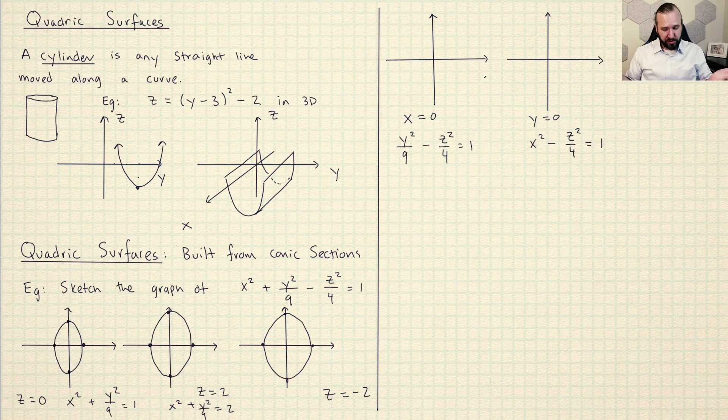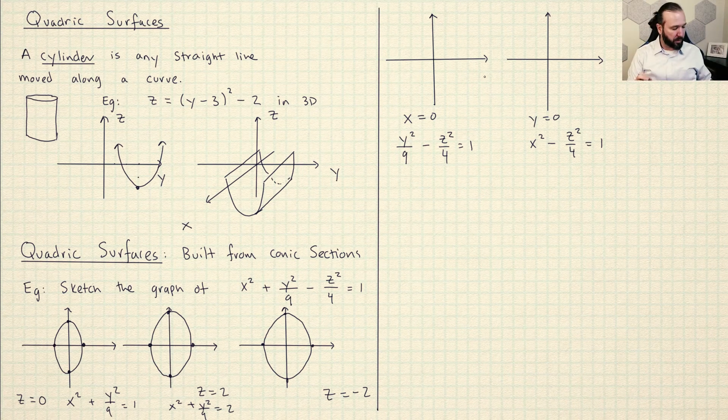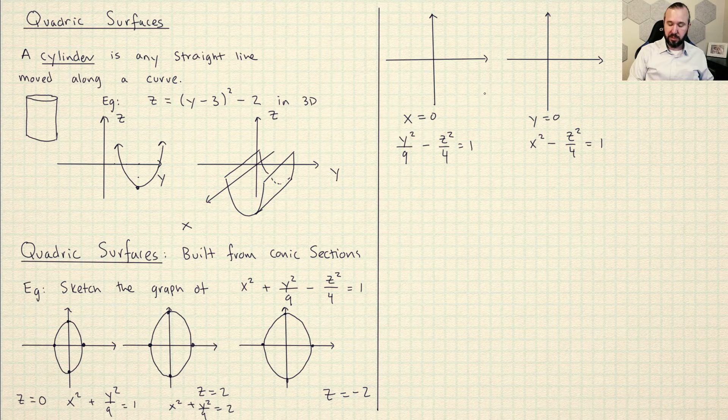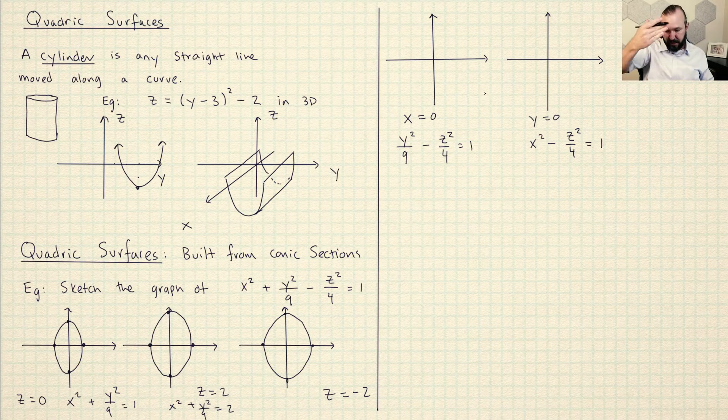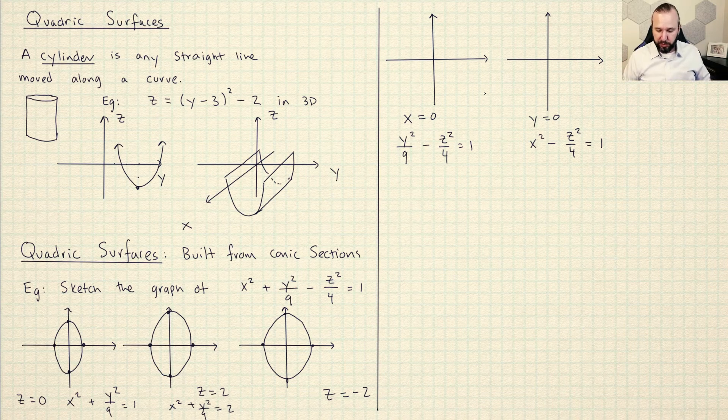But I don't know what the walls of the house look like. So now what I'm going to do is plug in Z is equal to zero and Y is equal to zero. So this is kind of slicing the house north, south and east, west to see what the walls look like.